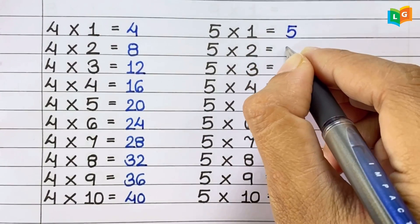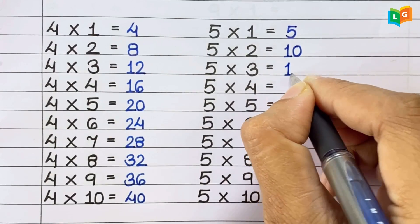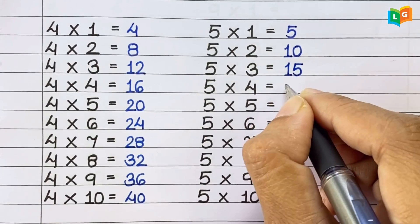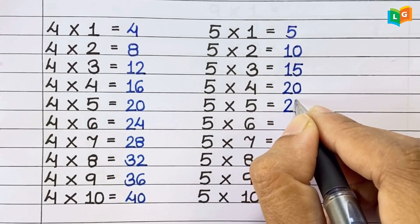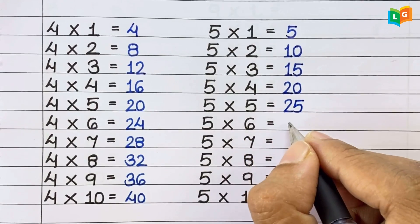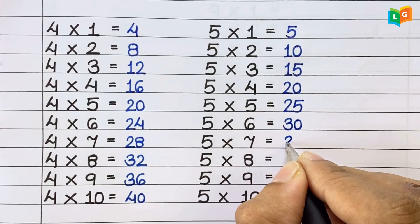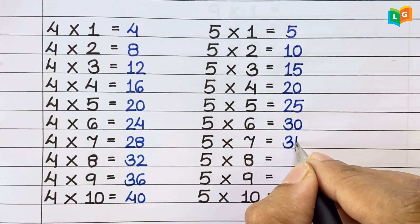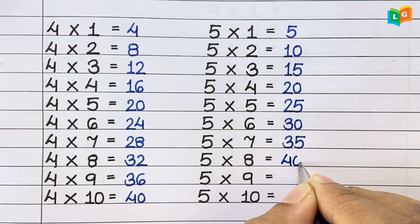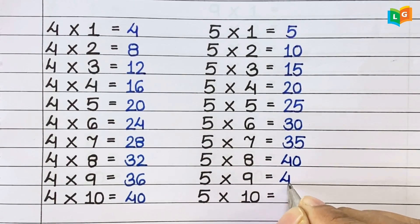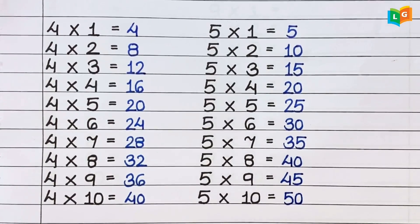Now let's see table of 5. 5 1s are 5, 5 2s are 10, 5 3s are 15, 5 4s are 20, 5 5s are 25, 5 6s are 30, 5 7s are 35, 5 8s are 40, 5 9s are 45, 5 10s are 50.